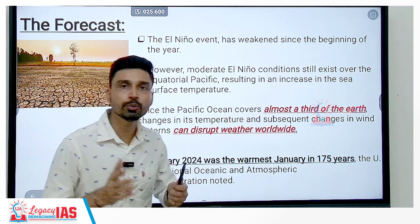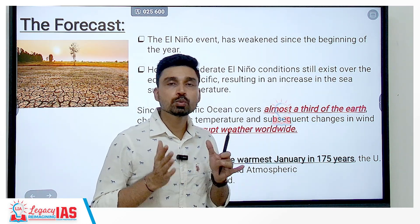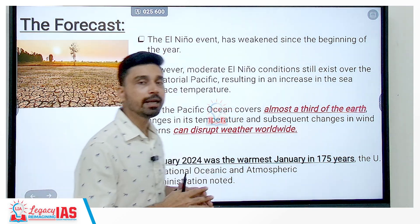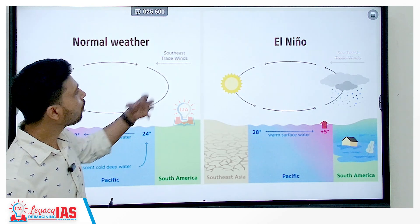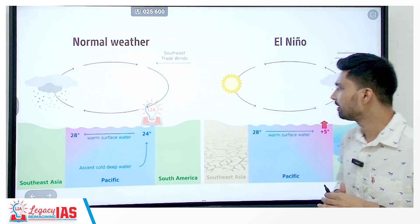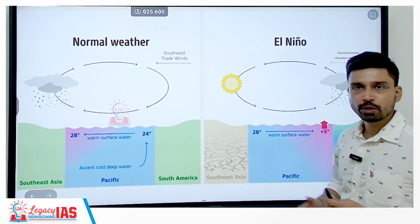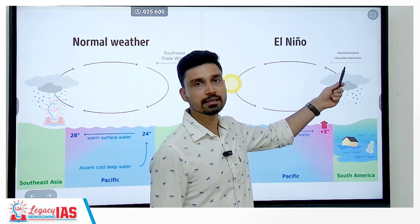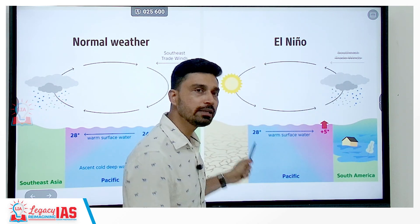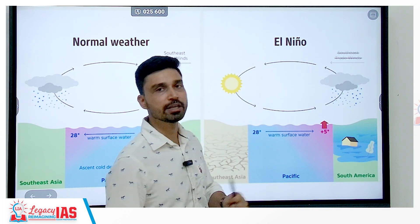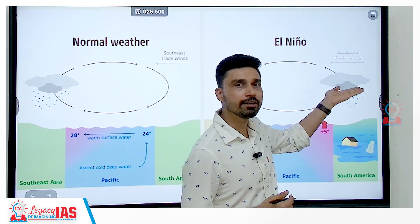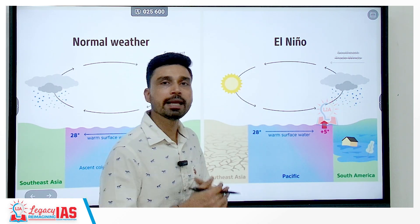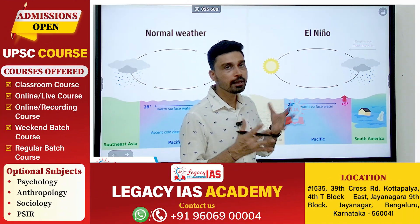January 2024 was the warmest January recorded in the last 175 years, as clarified by the US National Oceanic and Atmospheric Administration, NOAA. Regarding how El Niño affects weather in the Indian Ocean: during El Niño conditions, temperatures near the South American coast become higher, causing air to rise near South America and sink near the Australian coast or the South Asian region. This results in very heavy rainfall over South America and drought-like conditions over Southeast Asia, as the sinking air prevents condensation, cloud formation, and precipitation.